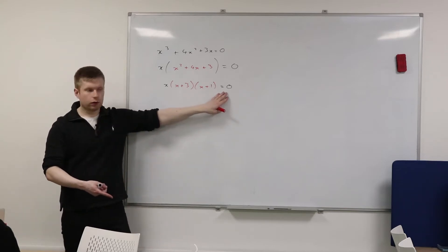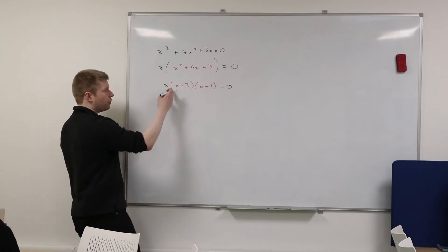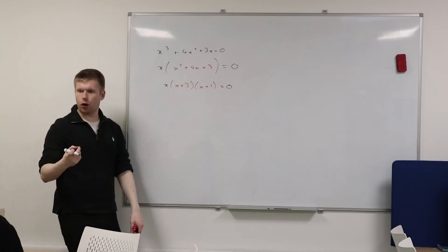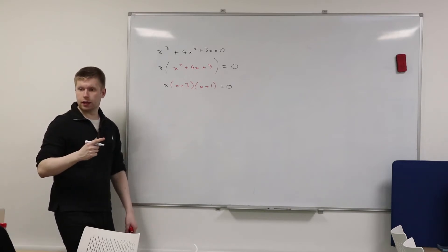They're being multiplied together, and what do they have to make? A zero. They have to make zero. One of them has to be a zero. Spot on. So because you're multiplying three things together, and they make zero, you know the only way that can happen is if at least one of those things is zero. Does that make sense?